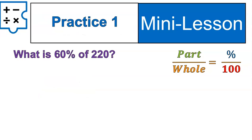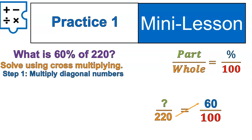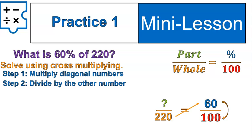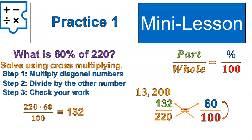Let's do some practice. First off: what is 60% of 220? We're going to set up our proportion. We know 60 is the percent. We are looking for a value out of 220, so 220 is our whole number and the part is our unknown. We solve using cross-multiplying — multiply the diagonal numbers, divide by the number that's left. So it's 220 times 60 divided by 100. We get 132. Cross-multiplying always lets us double check our work, which is fantastic.